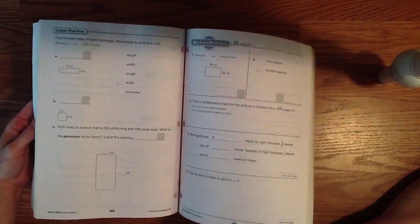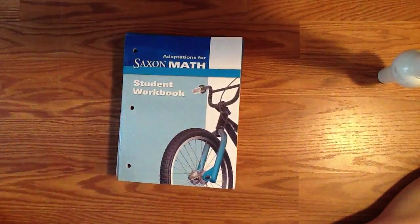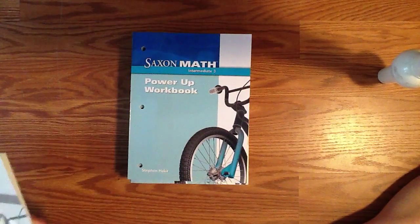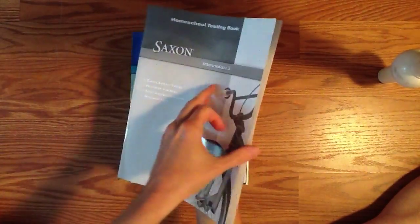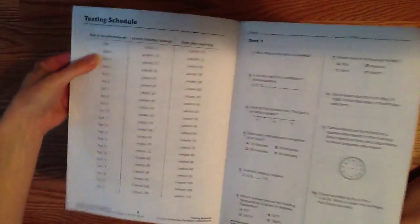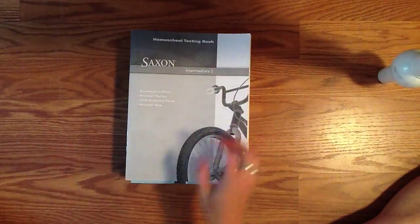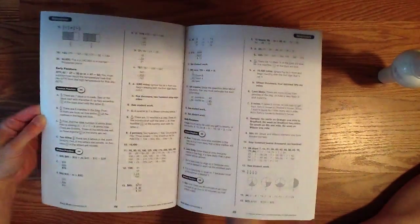And quickly here I'll just flip through the workbook where they'll record all their answers. Along with the workbook and the textbook - I already showed you the power-up workbook - you'll have one lesson to do with that each day. You'll also have a testing workbook, and so it will give you your testing schedule. It will tell you when you need to give each test, and then here you have all the tests and assessments for the year. And finally you have your solutions manual with all your answer keys. So again, I'm sorry I don't have the teacher's guide to show you, but this at least gives you a glimpse into the Saxon math.